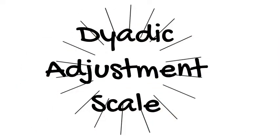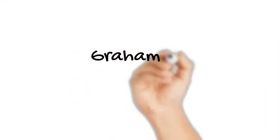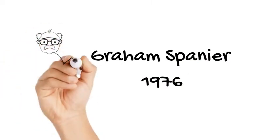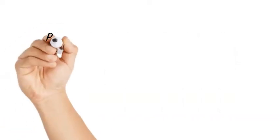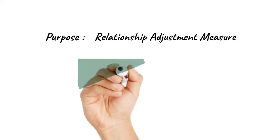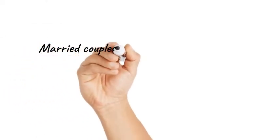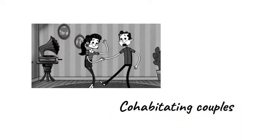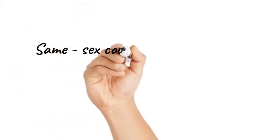The Dyadic Adjustment Scale was developed by Graham Spanier in 1976. The purpose behind creating the Dyadic Adjustment Scale was to develop a relationship adjustment measure that could be used not only with married couples, but with other dyads such as unmarried, cohabitating, or same-sex couples.